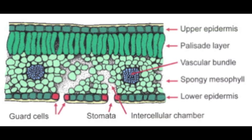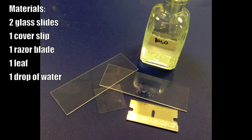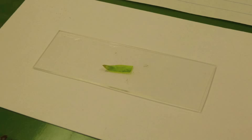We will be viewing the different structures of a leaf cross-section under a compound microscope. Place your leaf on one slide and add a small drop of water. Place the other glass slide on top of the leaf, leaving a portion of the leaf exposed for cutting.